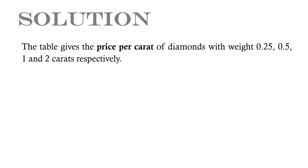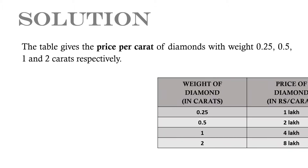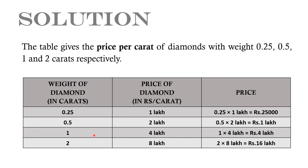Solution: The table gives the price per carat of diamonds with weight 0.25, 0.5, 1, and 2 carats respectively. The price of a 0.25 carat diamond is Rs. 1 lakh per carat.